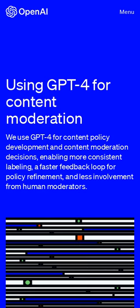OpenAI proposes using GPT-4 for content policy development and content moderation decisions across digital platforms, taking the burden away from humans and allowing more consistent labeling of content and faster feedback loops. This begs the question: should AI be the authority on who can say what?